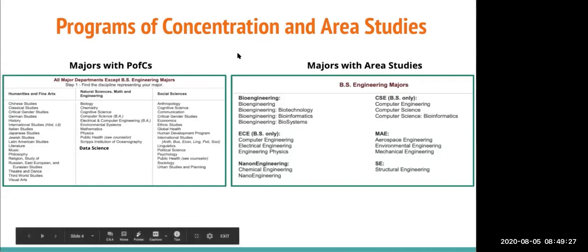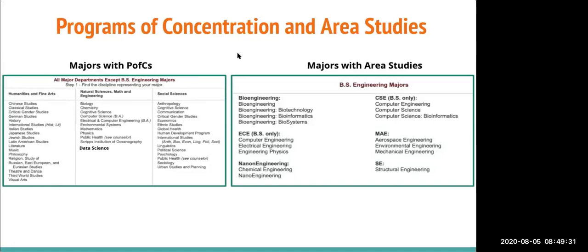All other majors are required to complete PFCs in areas non-contiguous to their major. This information should sound familiar if you've completed the Compass pre-orientation training and the new Triton advising portal. PFCs are made up of six courses — three lower division and three upper division — while area studies are comprised of three courses per area study, with one lower division and two upper division courses in each non-contiguous discipline.